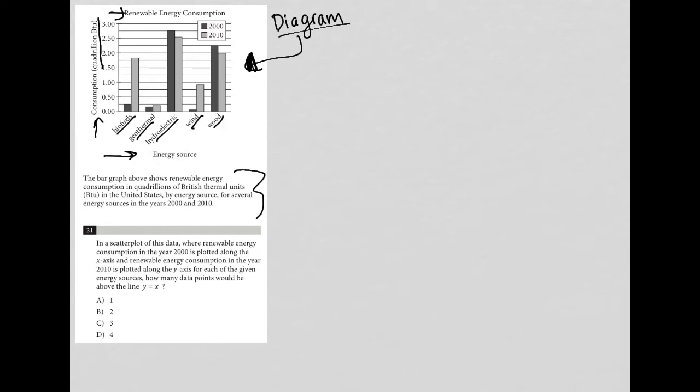So the bar graph above shows renewable energy consumption in quadrillions of British thermal units in the United States by energy source for several energy sources in the years 2000 and 2010. Great. So I knew that by looking at the chart or the bar graph, but it's always good to read this just in case there's some interesting added information.